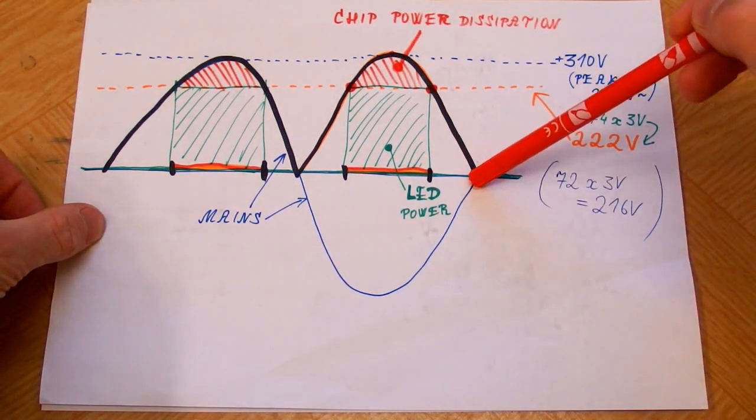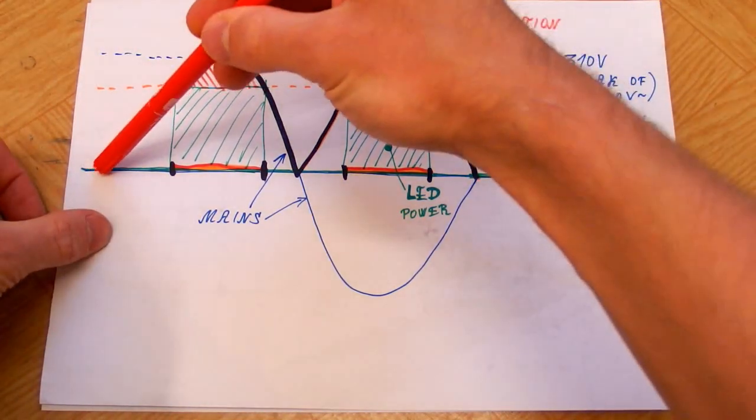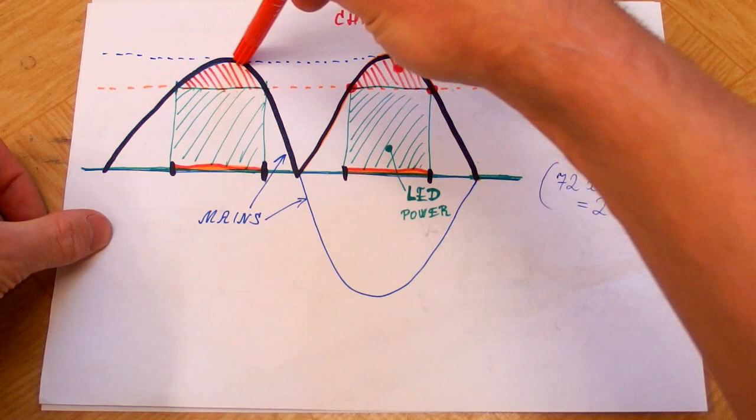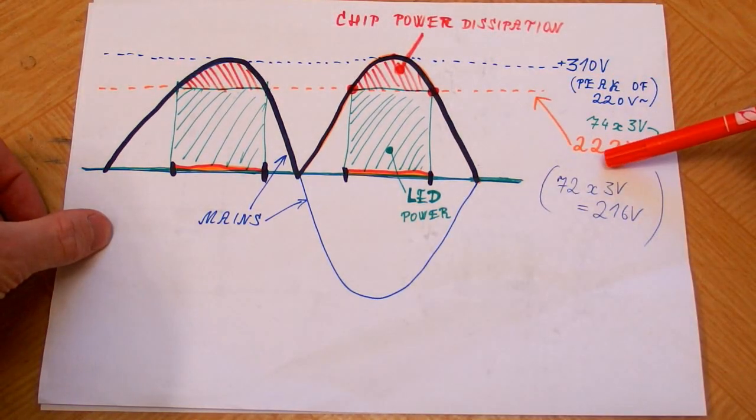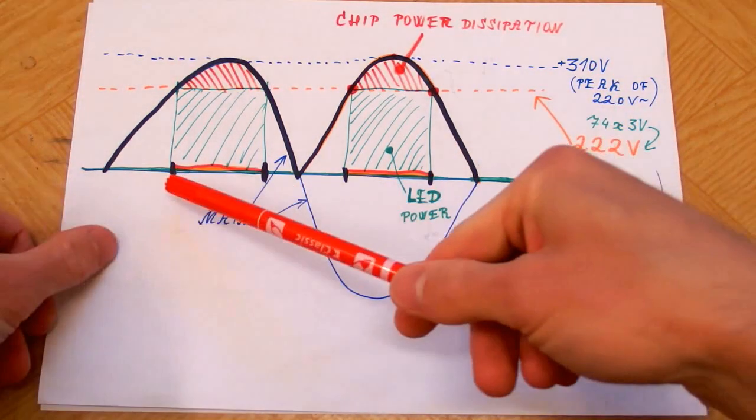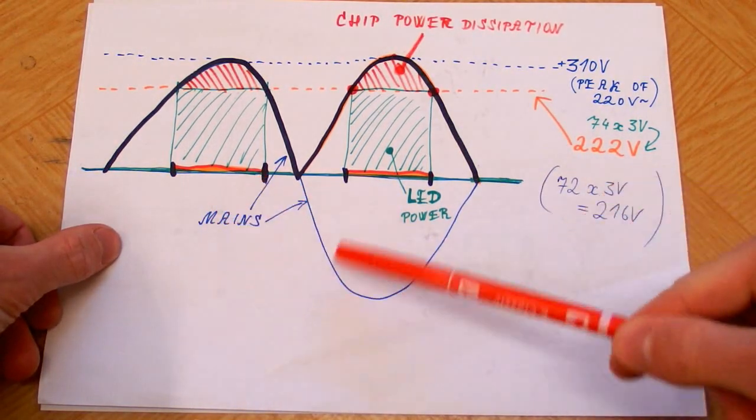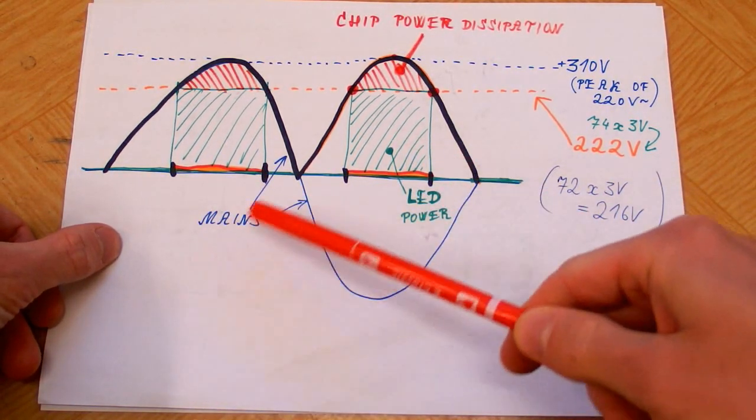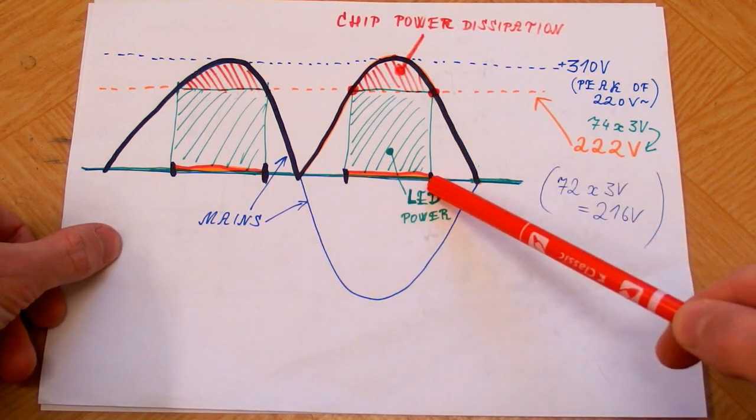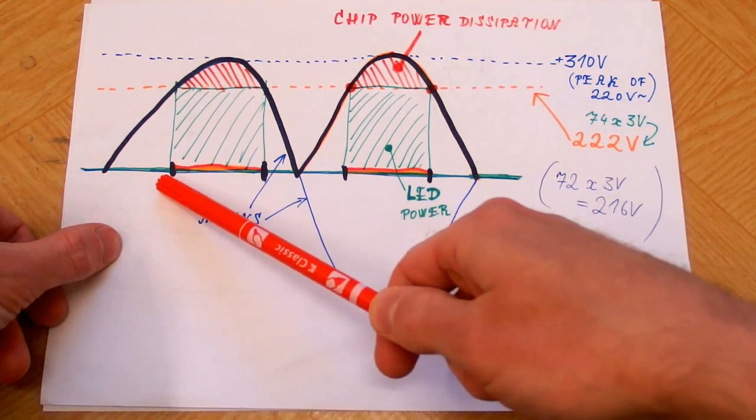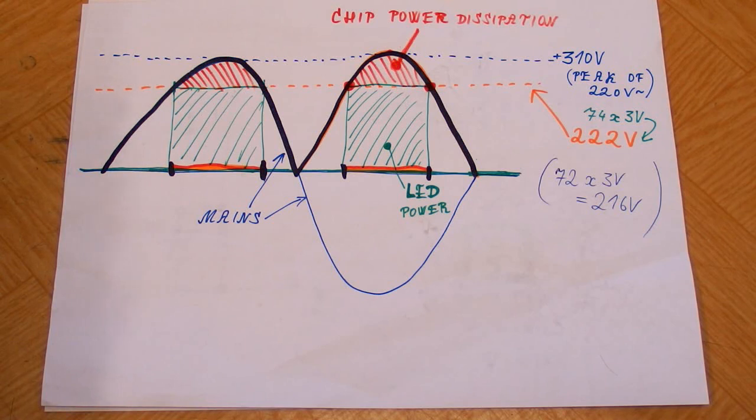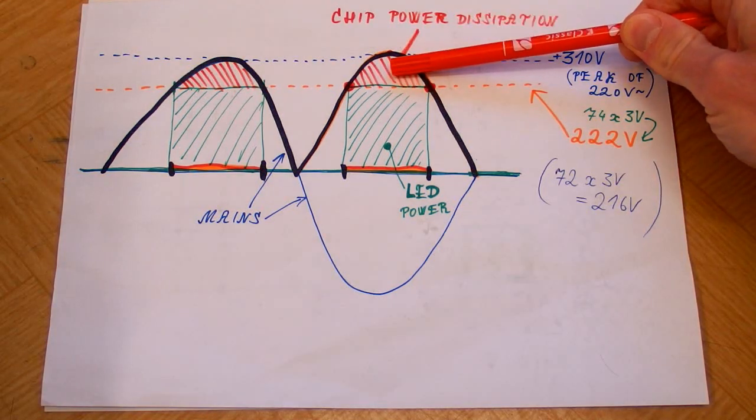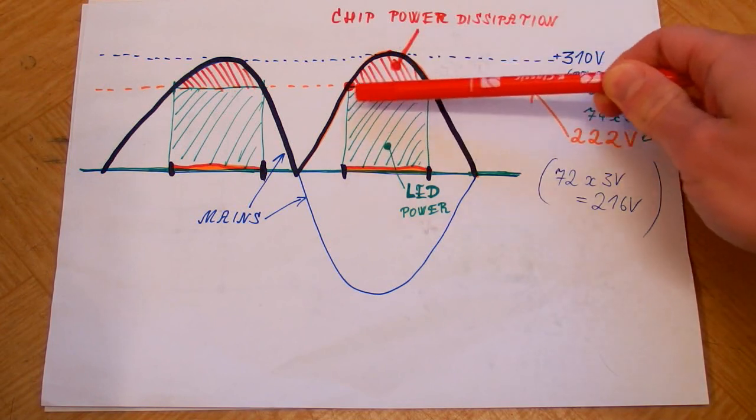Which looks like this. And it flickers because it only lights up when the mains voltage is higher than the voltage drop of the LEDs. So from here to here and from here to here it's on. And from here to here and from here to here it's off. And the current regulating chips are just constant current linear regulators. So it's lossy. And this area represents the power dissipation in the current regulator. And this is the power of the LEDs.